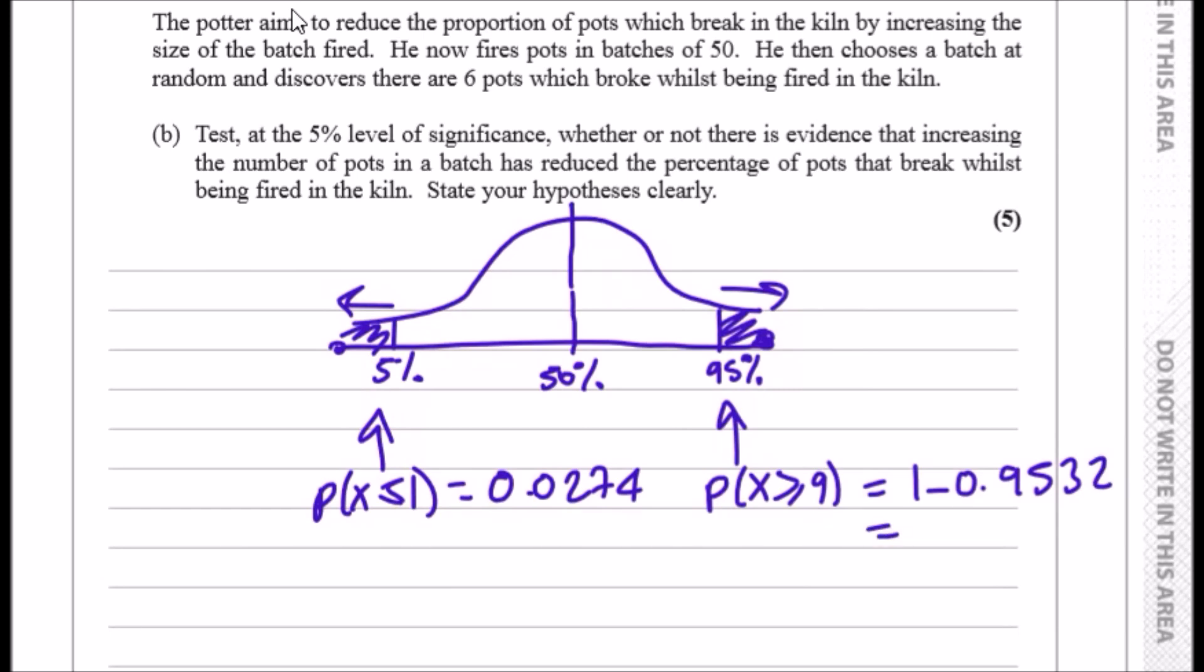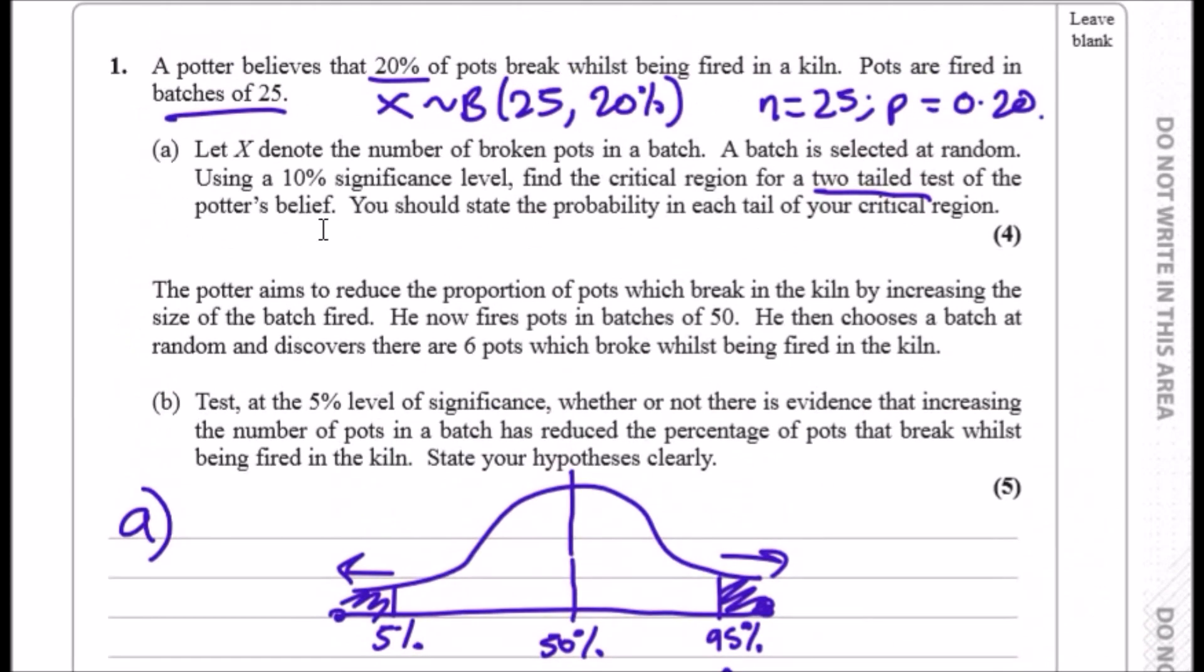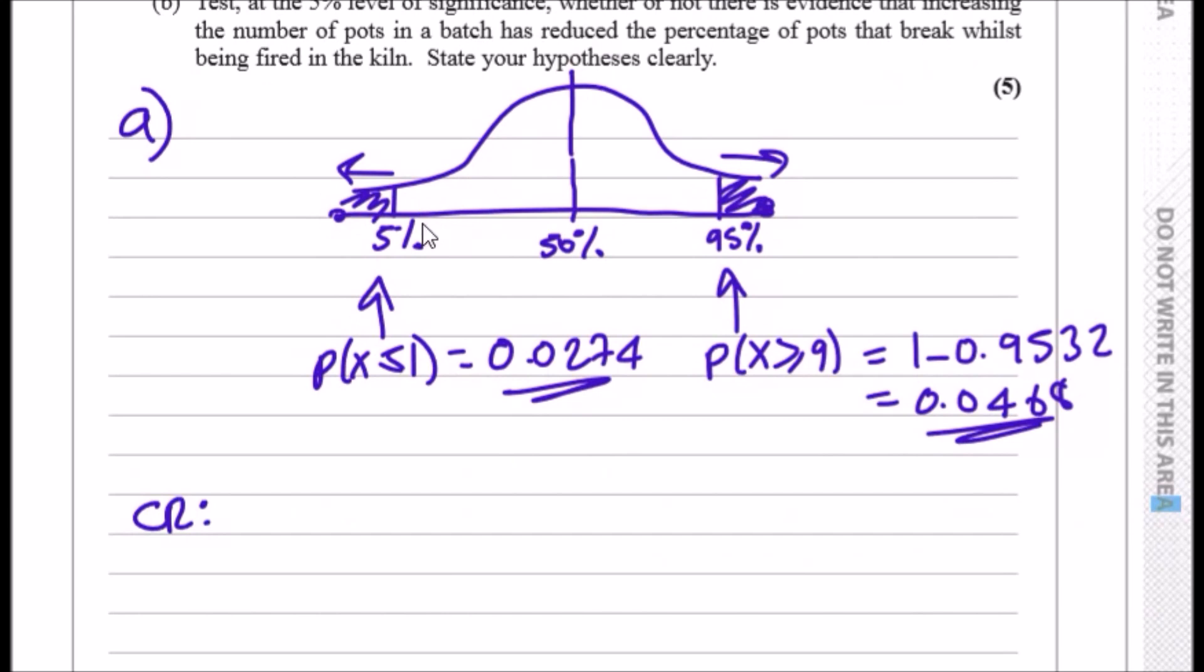This small region represents exactly 0.0468. Ultimately, the actual critical regions, which are the shaded parts, lie between everything from 0 to 1, and from 9 onwards. So we can write: 0 less than or equal to x less than or equal to 1, and 9 less than or equal to x less than or equal to 25, because that's how many it goes up to. These are the values of x that are less than 5% or in the remainder 5%.